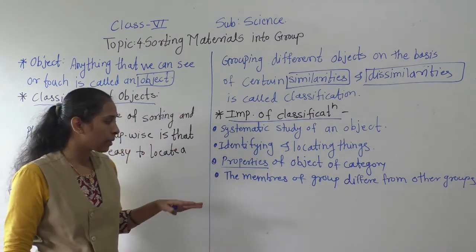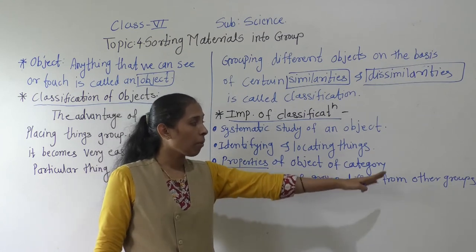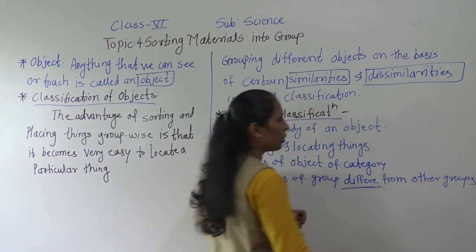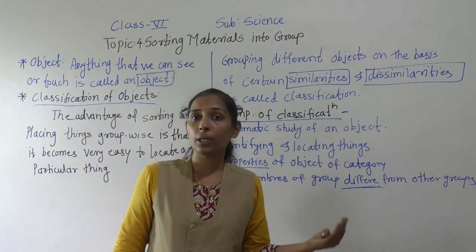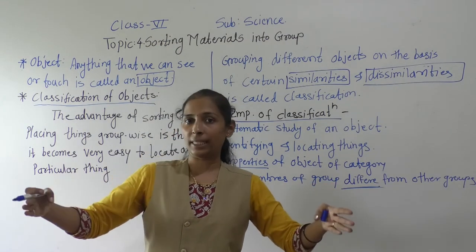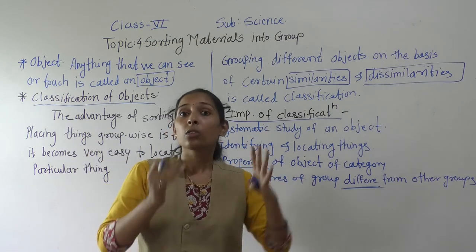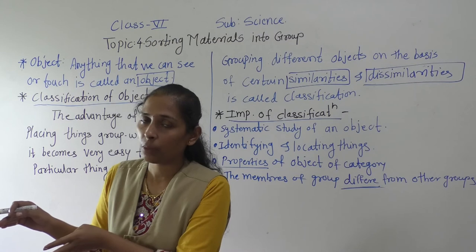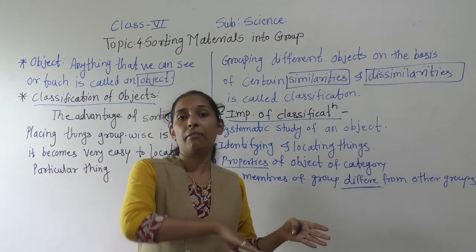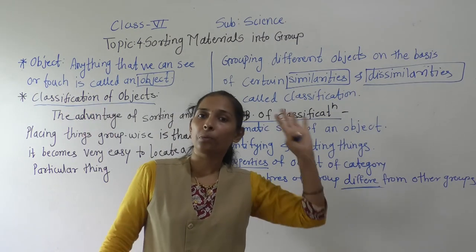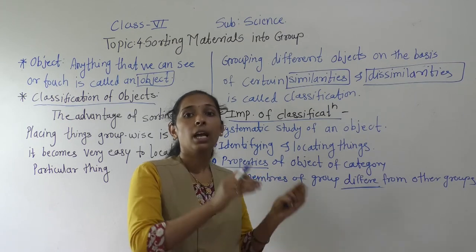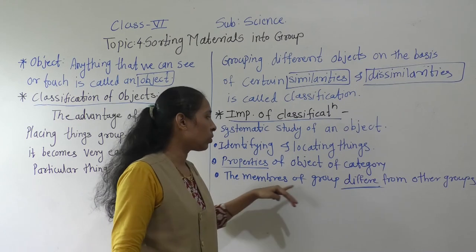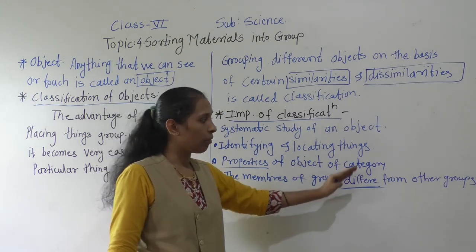Classification also helps to study how members of one group differ from another group. For example, take cereal crops and pulses. Pulses form one group and cereals form another. On the basis of their similarities, we can say cereals are different from pulses — all cereals share certain properties that are different from those of pulses.